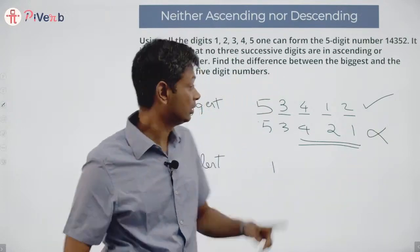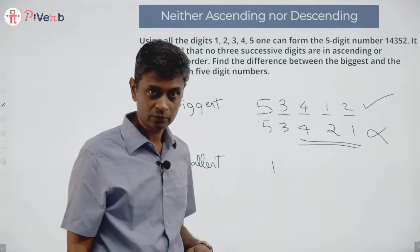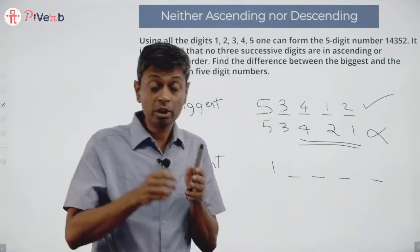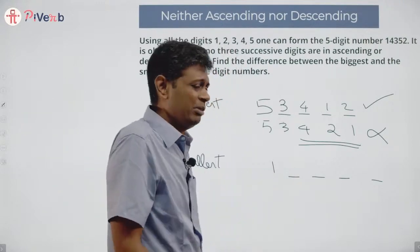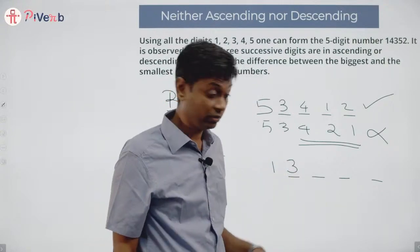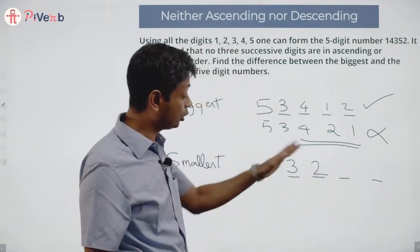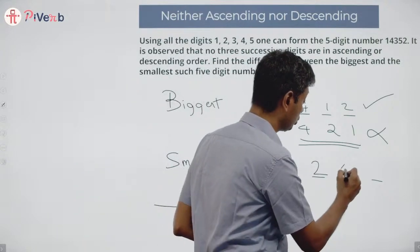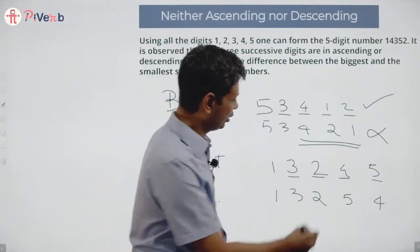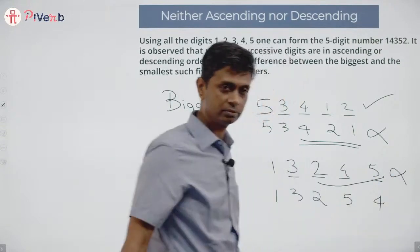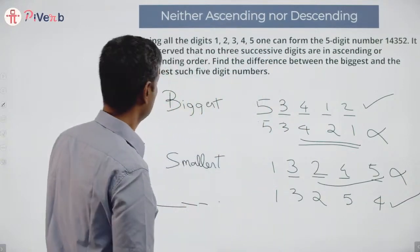So the largest possible number is 53412. For the smallest, I start with 1. The second digit cannot be 2, because then 1-2-anything would be ascending. The minimum valid second digit is 3. With 1-3, the third digit cannot be 4 or 5 — it must be 2, giving 1-3-2. Testing 13254: works! Testing 13245: fails because 2-4-5 is ascending. So the smallest is 13254.